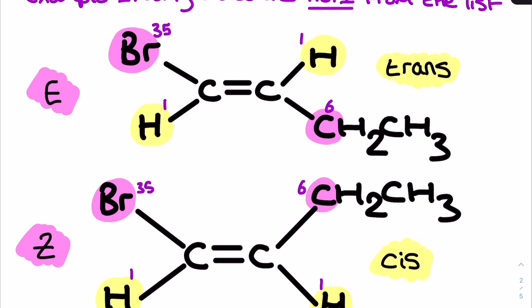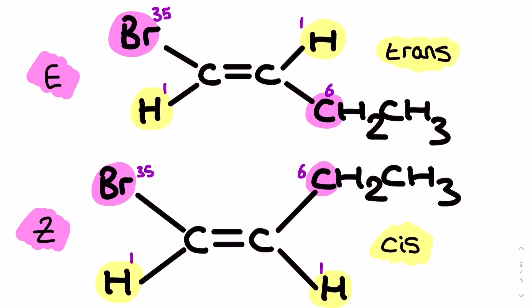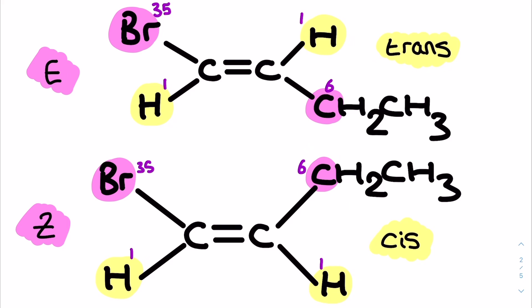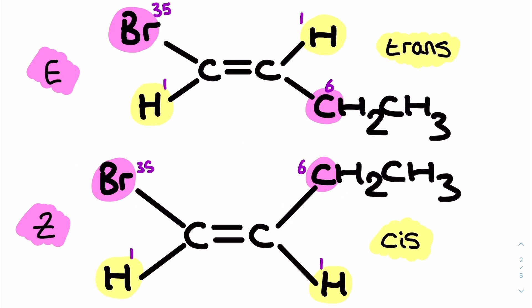Looking at the structure drawn underneath, which is the stereoisomer of this molecule — still structural isomer number one from the original list — the groups on the right-hand side were arranged differently when the bond was formed. These are stereoisomers of each other because they have the same structural formula but atoms arranged differently in space. Here the six is at the top and the one at the bottom, so my two high priority groups are on the same side — the top side — making this the Z stereoisomer.